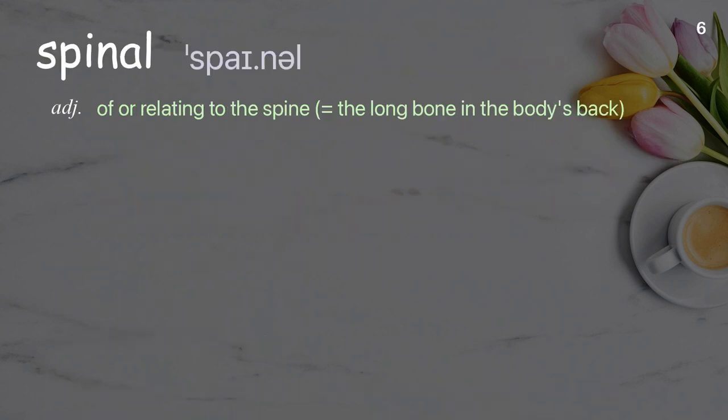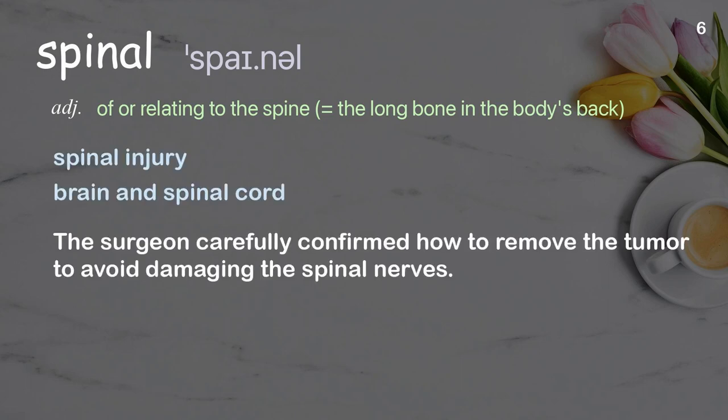Spinal: of or relating to the spine — the long bone in the body's back. Examples: spinal injury; brain and spinal cord. The surgeon carefully confirmed how to remove the tumor to avoid damaging the spinal nerves.